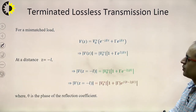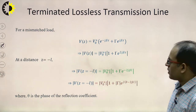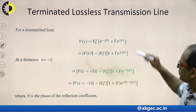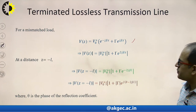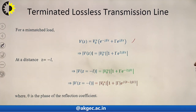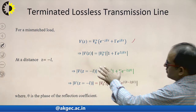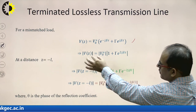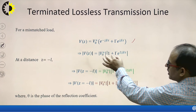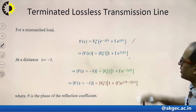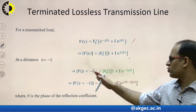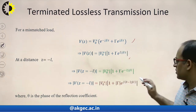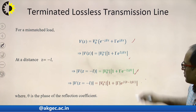For a mismatched load, V(z) = V+ [...]. Taking the magnitude, |V(z)| = |V+| × |1 + Γ e^(j2βz)|. Putting z = −l gives the voltage magnitude at that point.